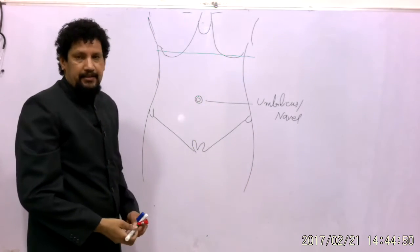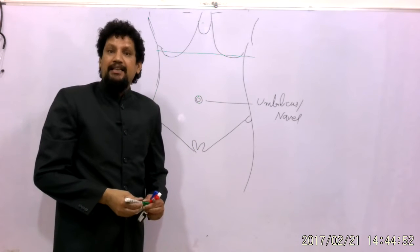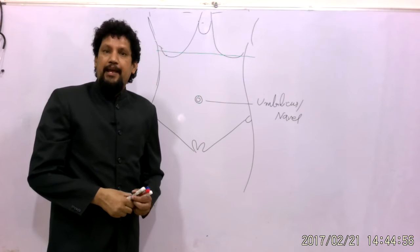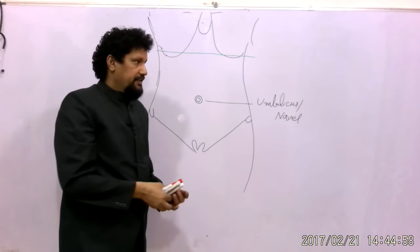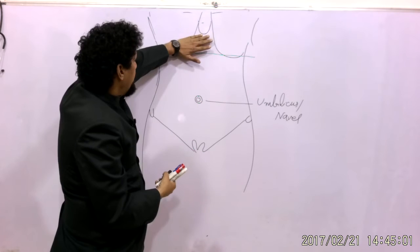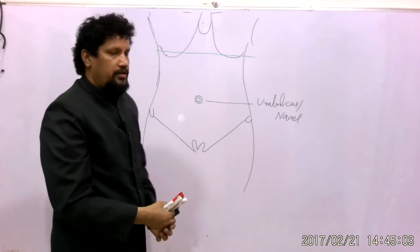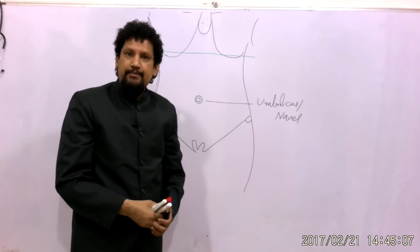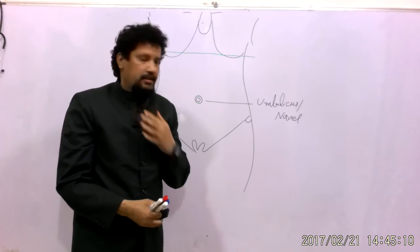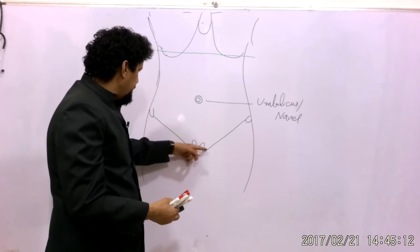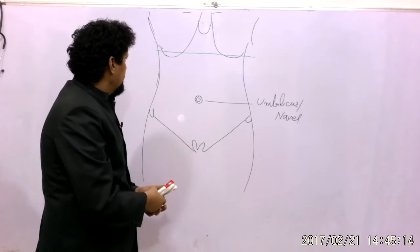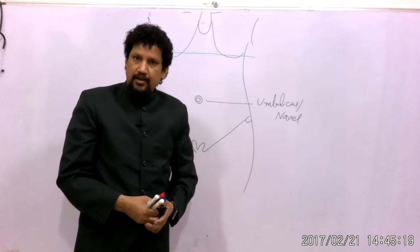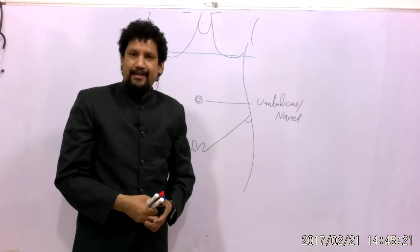The transpyloric plane passes through the ninth costal cartilage, one hand's breadth below the xiphisternal joint, and also passes midway between the suprasternal notch and the upper border of the pubic symphysis. Many organs are located at this level.